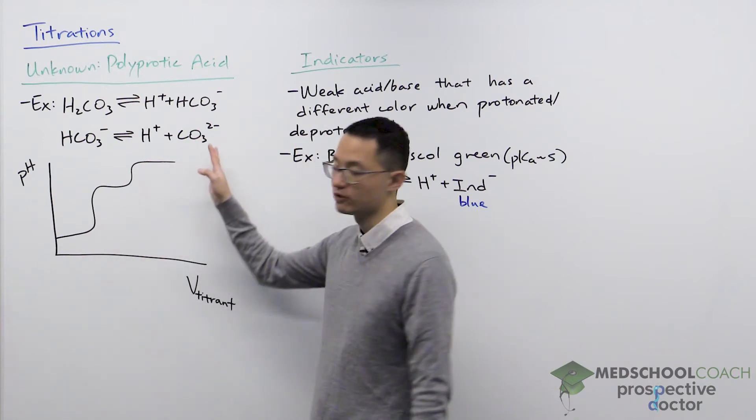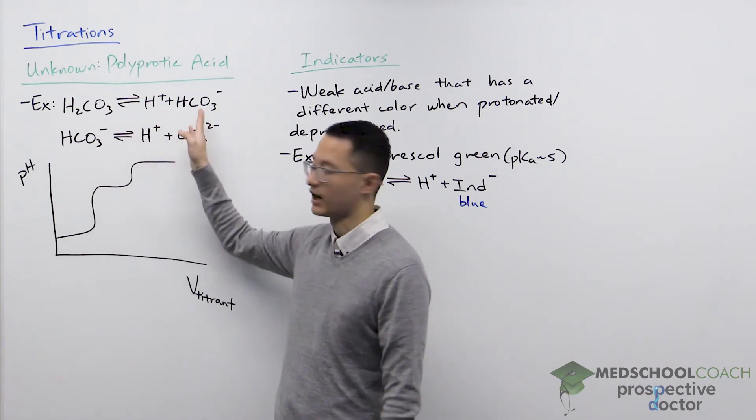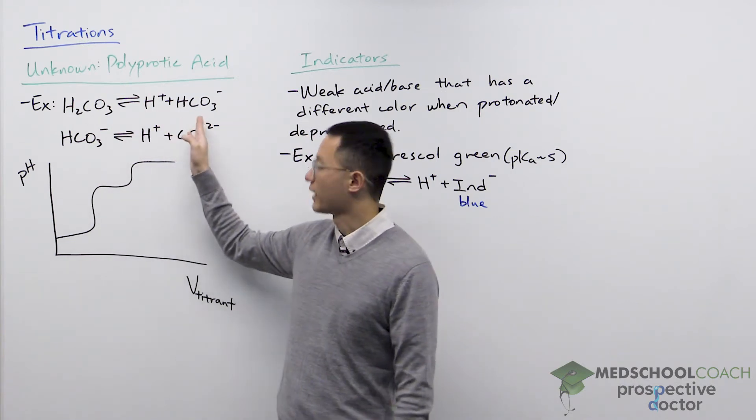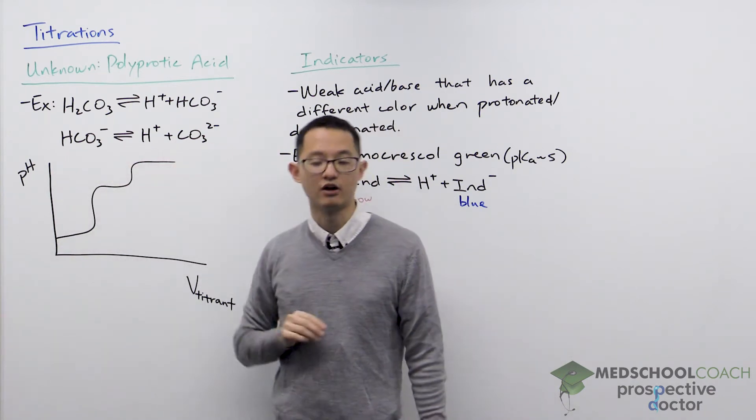For example, here we have carbonic acid. Carbonic acid can dissociate to form one hydrogen ion and a bicarbonate. Bicarbonate, however, can dissociate again to form a second hydrogen ion and carbonate.